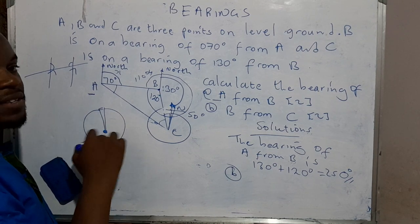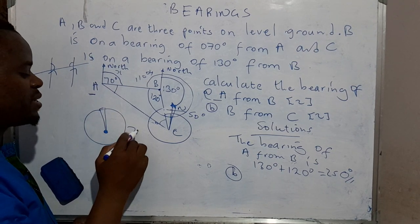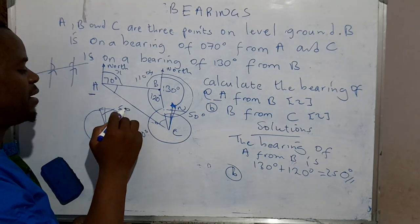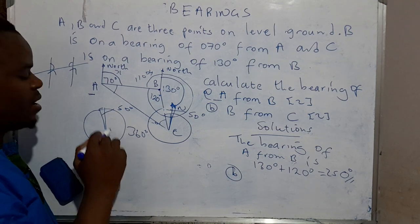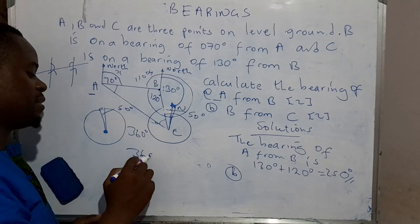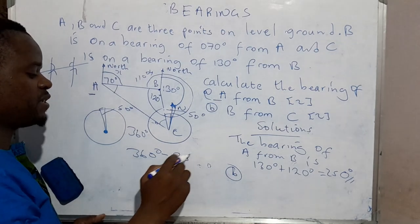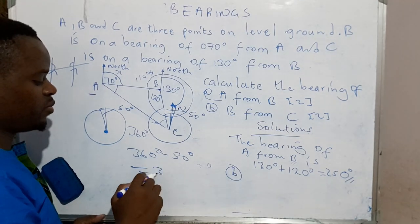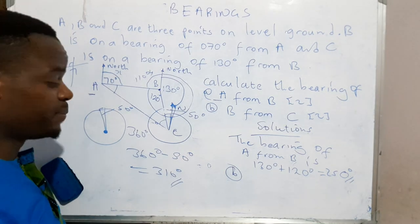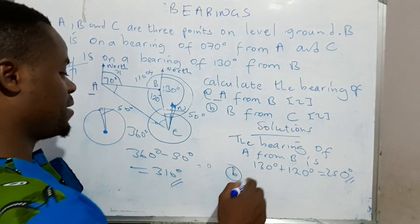When we complete the circle, we have to have 360 degrees. But out of it, we have 50 here. Then the question is, what is the remaining angle here? I would say 360 degrees minus 50 degrees is equal to 310 degrees.